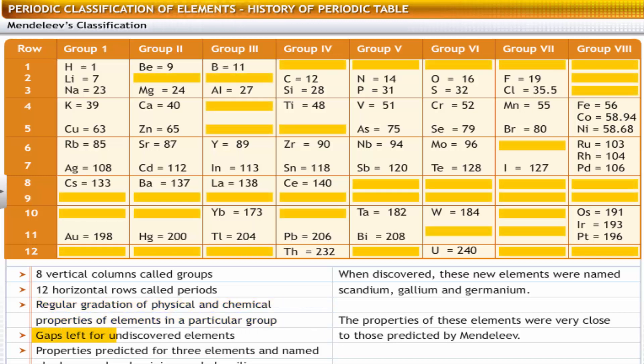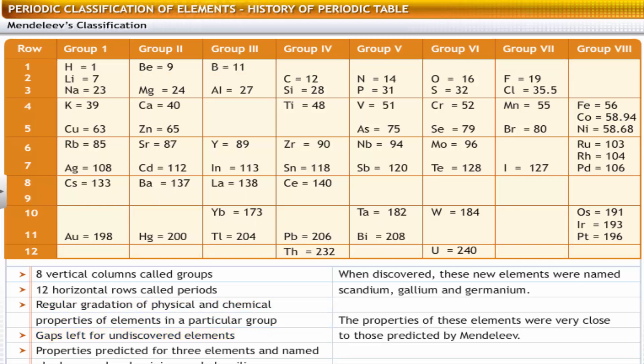The table provided gaps for undiscovered elements. The table helped predict the properties of three elements. These elements were named eca-boron, eca-aluminium, and eca-silicon. When these elements were discovered, they were named scandium, gallium, and germanium. The properties of these elements were very close to those predicted by Mendeleev.